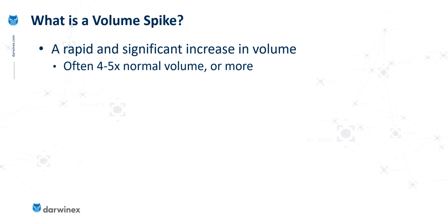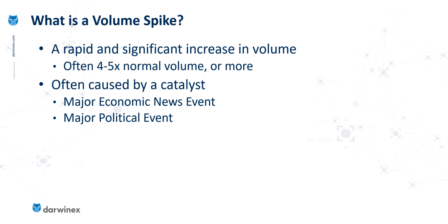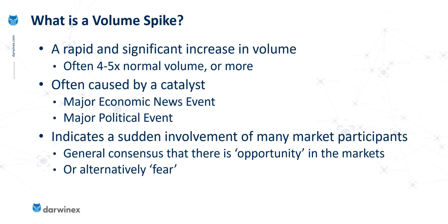So first off, how do we define a volume spike? Well, this is where we see a rapid and significant increase in the volume. This might be four to five times the normal volume for that particular time of day for that asset, or in some exceptional circumstances it could even be ten times or more. When we observe a volume spike it's often caused by some kind of catalyst — so this could be a major economic news event, possibly an interest rate decision that went against expectations, or some other major political event. The volume spike itself indicates a sudden and significant increase in the involvement of market participants.